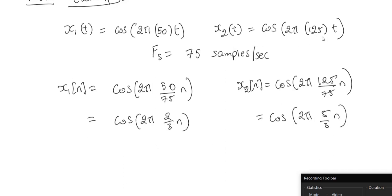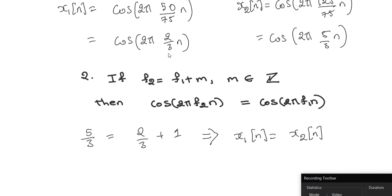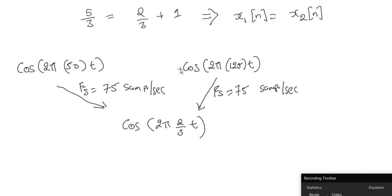In the video on sinusoidal signals, when we were discussing discrete time sinusoidals, we said that property number two was: when two discrete time cosine signals have frequencies which differ by integers, then they are the same signal. If you note the discrete frequencies of these two signals — two-thirds and five-thirds — we see that five-thirds equals two-thirds plus one. That means x1 of n should be equal to x2 of n. This means we started from two different continuous time sinusoidal signals: a cosine with 50 Hz is not the same as a cosine with 125 Hz. But if you sample both with a sampling rate of 75 samples per second, in the discrete time domain you will get the exact same signal.